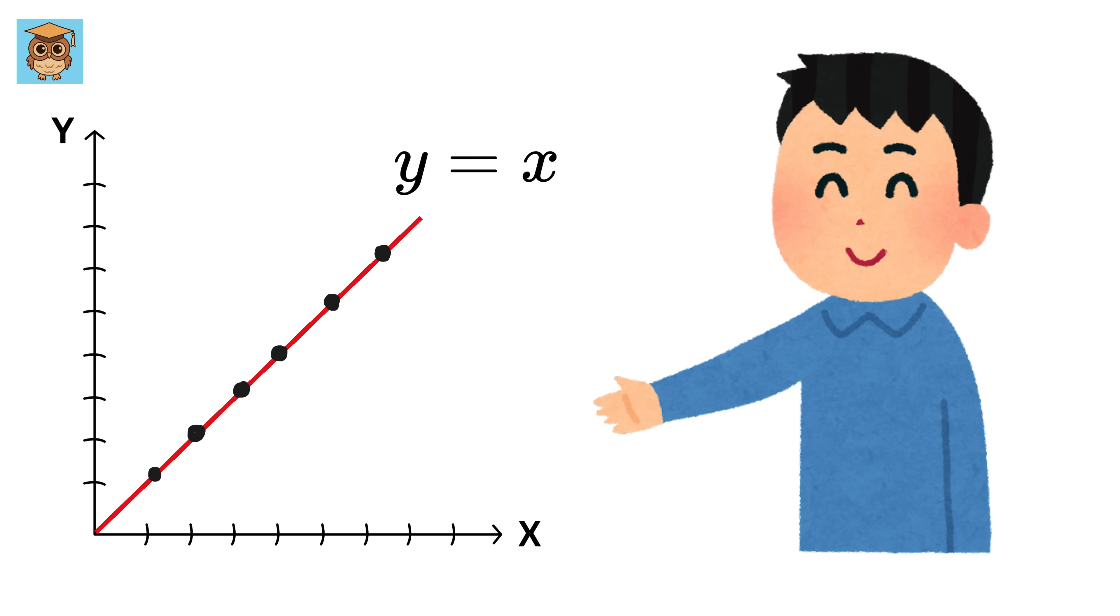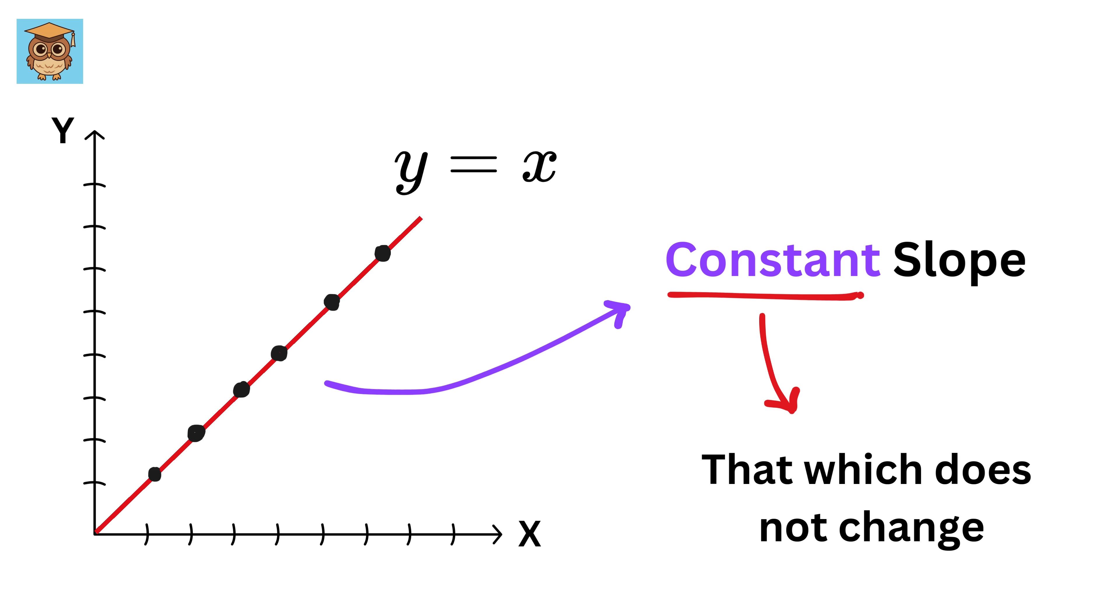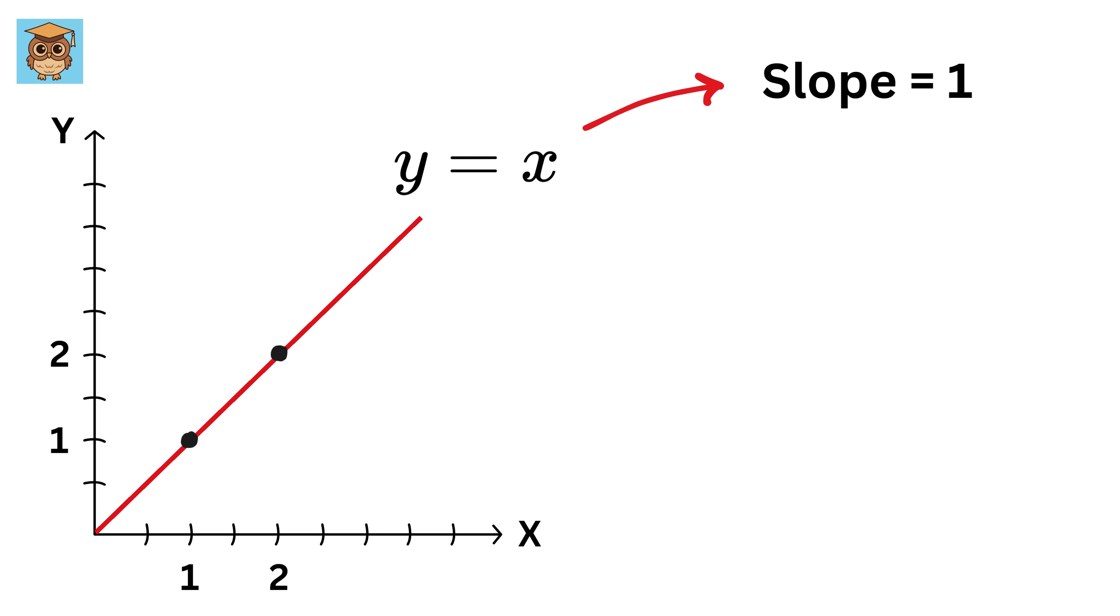Let's go back to the straight line for a moment. A straight line has a very special property. It has a constant slope. The slope tells us how steep the line is, that is how much y changes when x changes. For y equals x, the slope is 1, meaning for every one step forward in x, y goes up by 1.